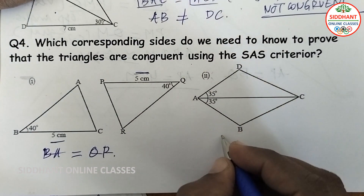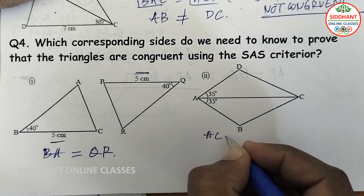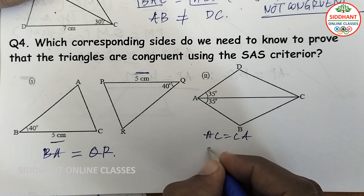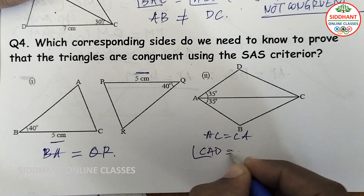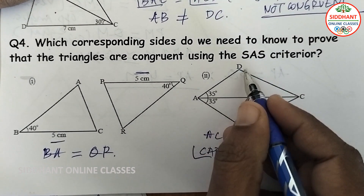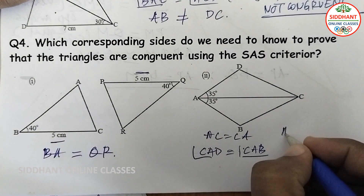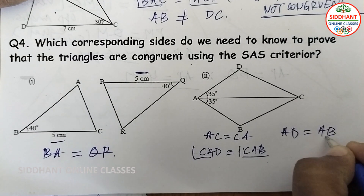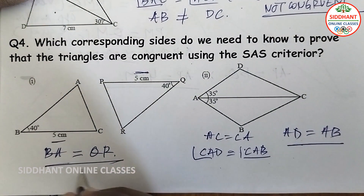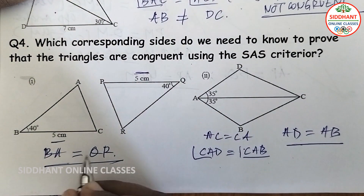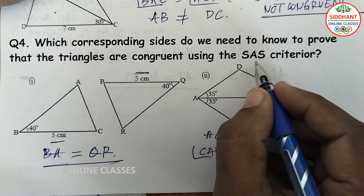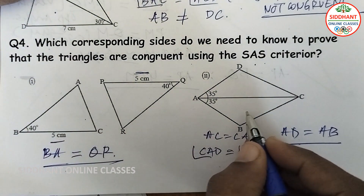For the second figure, AC equals CA and angle CAD equals angle CAB, both 35 degrees. The missing side information is AD equal to AB. If AD equals AB is given, then the two triangles are congruent. In both cases, the additional side information is what we need to apply the SAS side-angle-side criteria.